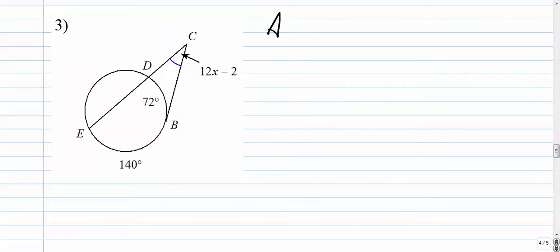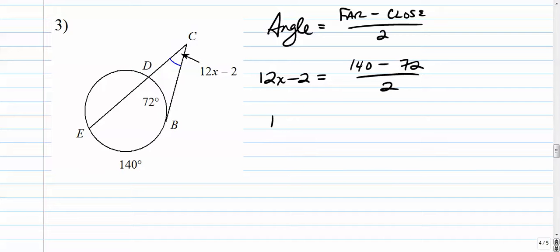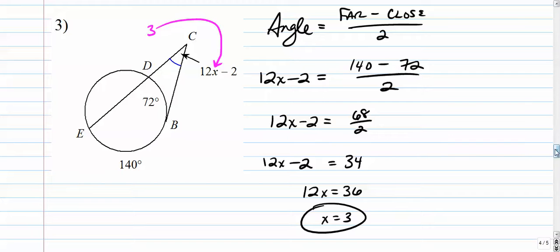Okay, moving right along. Feel free to pause these before I go through them, give them a shot, and then rewind or just press play to see if you got them right. Far away arc minus close arc over two. In this case, the angle is an expression: 140 minus 72 over two. We're not going to multiply both sides by two here because the numerator is just numbers. 140 minus 72 is 68, over two, that's 34. We're going to add two to both sides: 12x equals 36, x is three. And as always, I encourage you to plug that three back in here and see if it all works out.